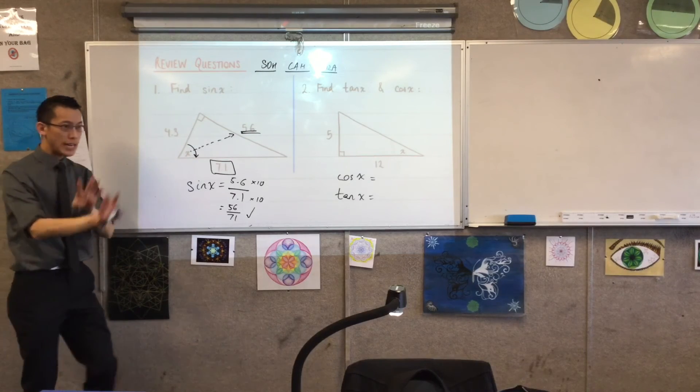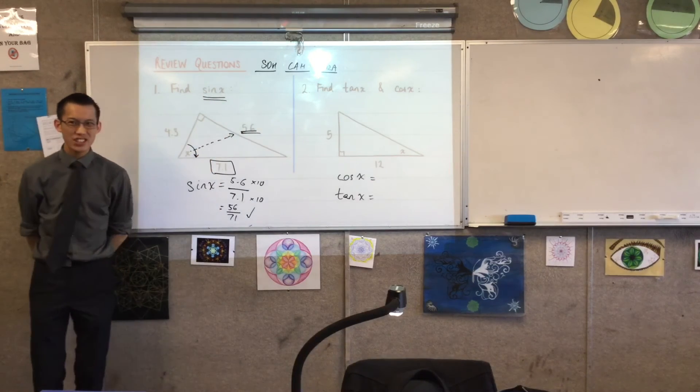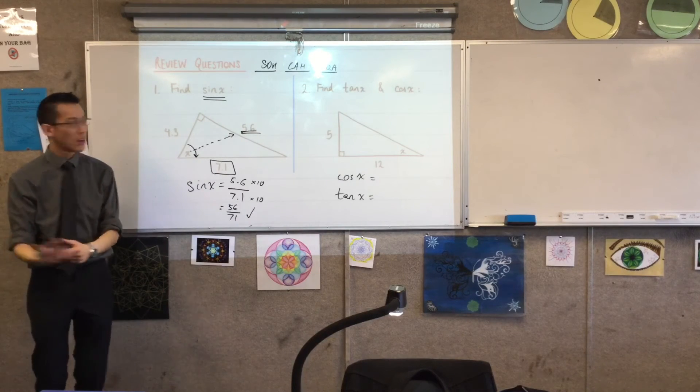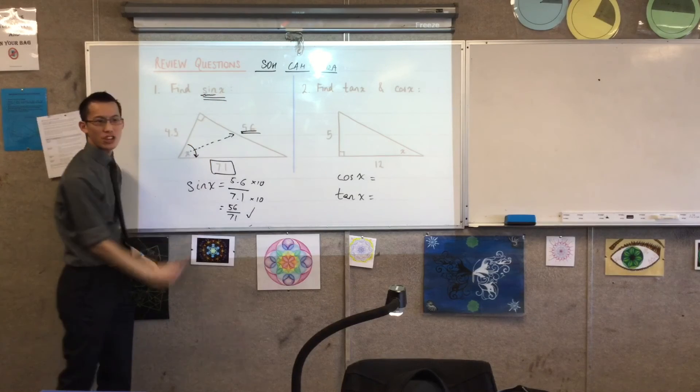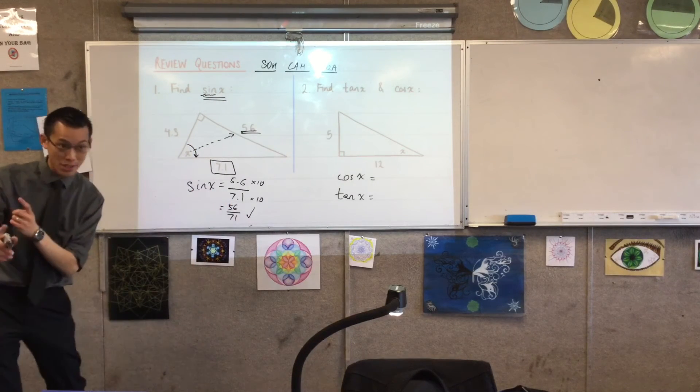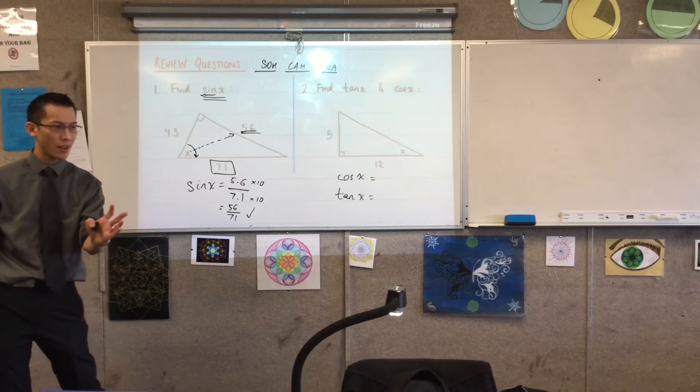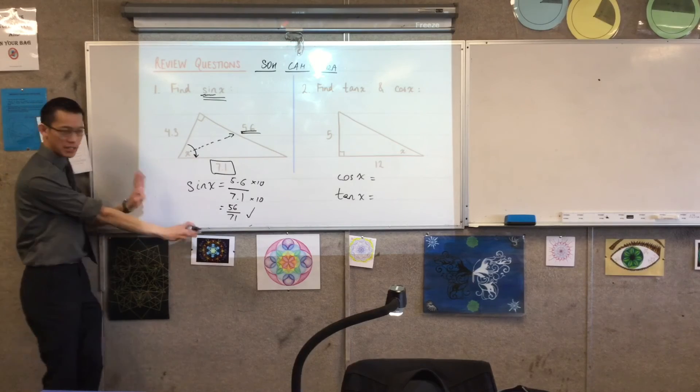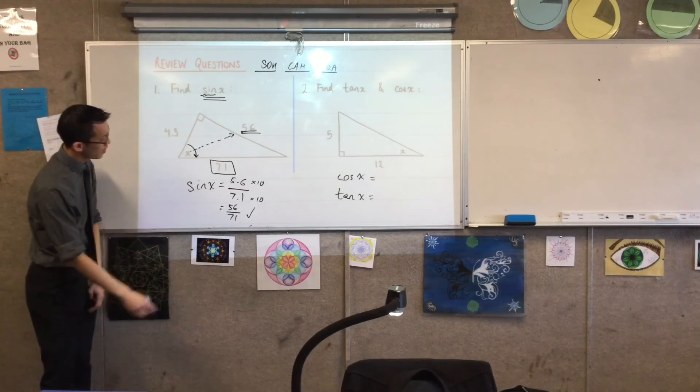However, read the question carefully. I'm not actually asking you for the size of the angle. I'm interested in this ratio, this opposite non-hypotenuse ratio. And if you recall back to when we did ratios and rates, ratios don't have units. It's just a number. So does that make sense? That's it, full stop.